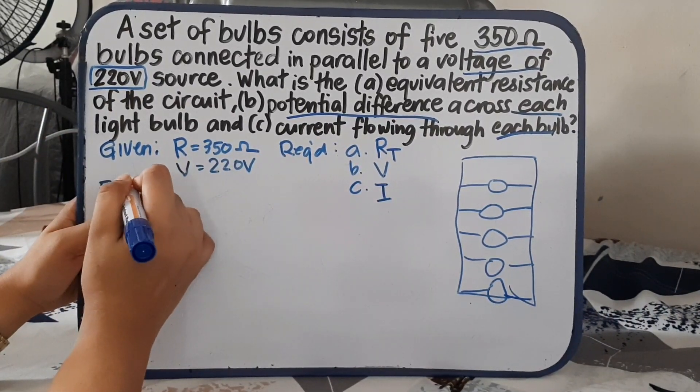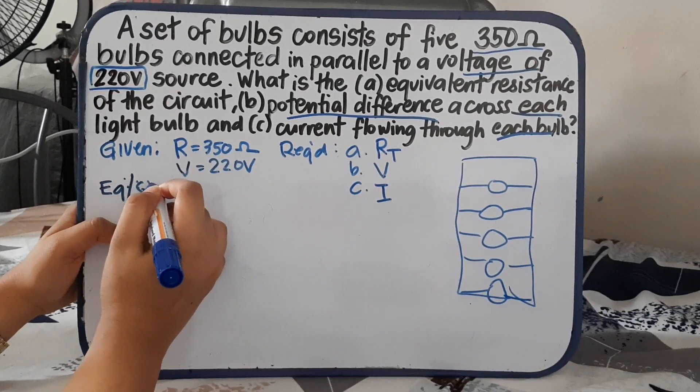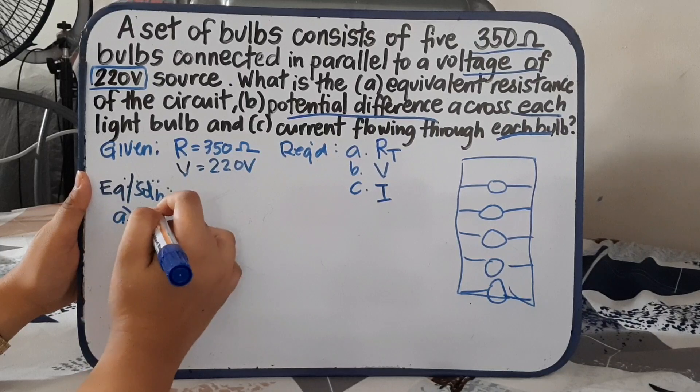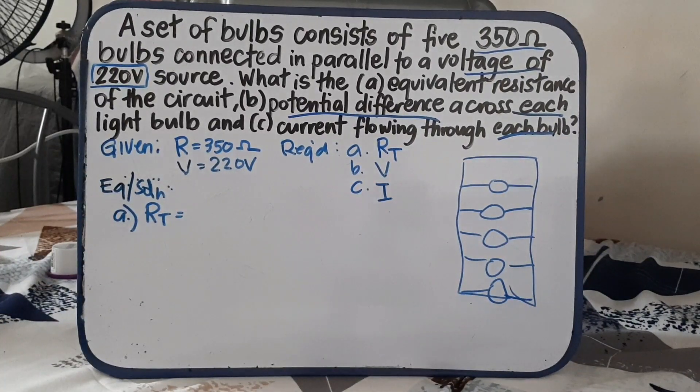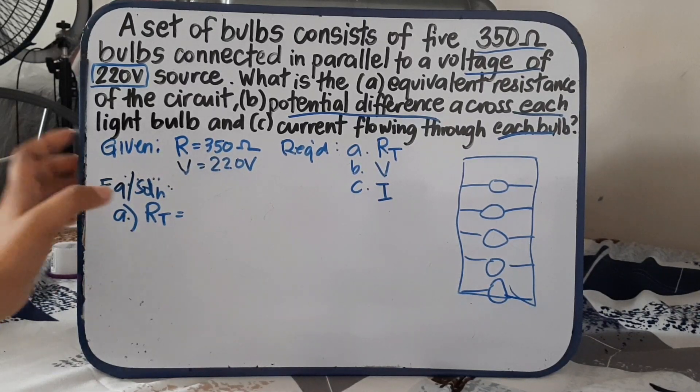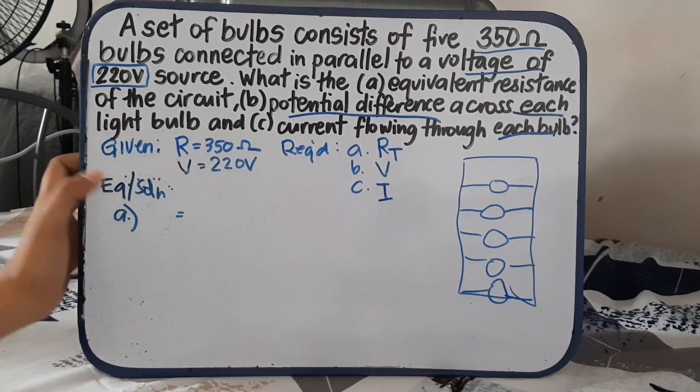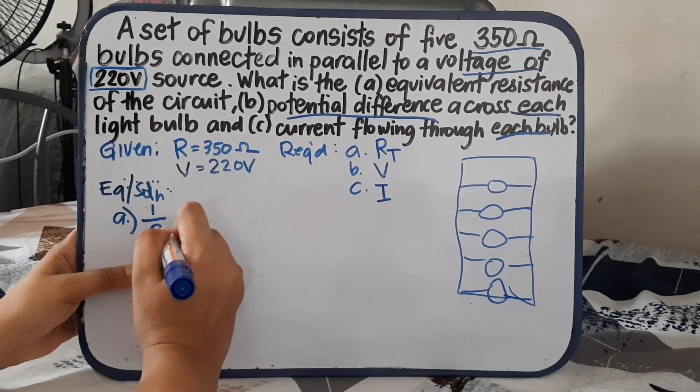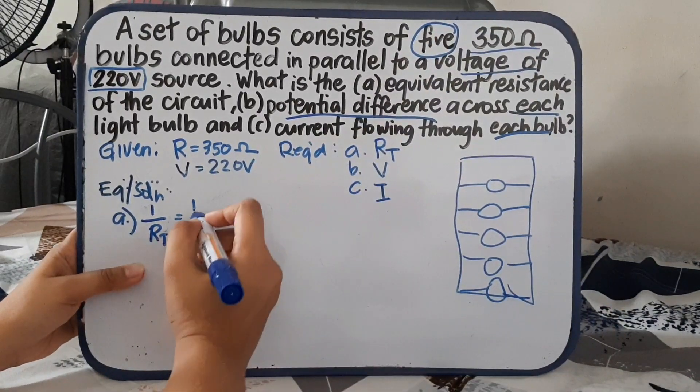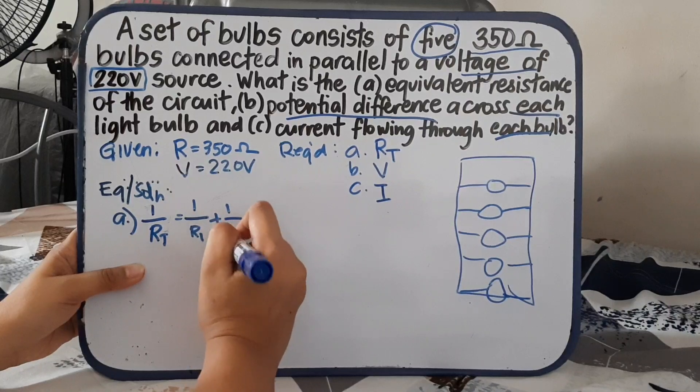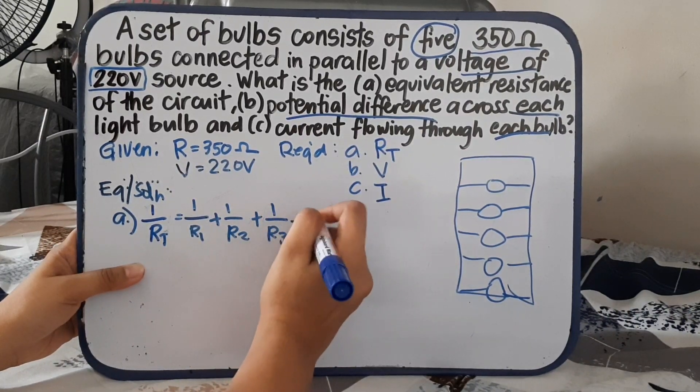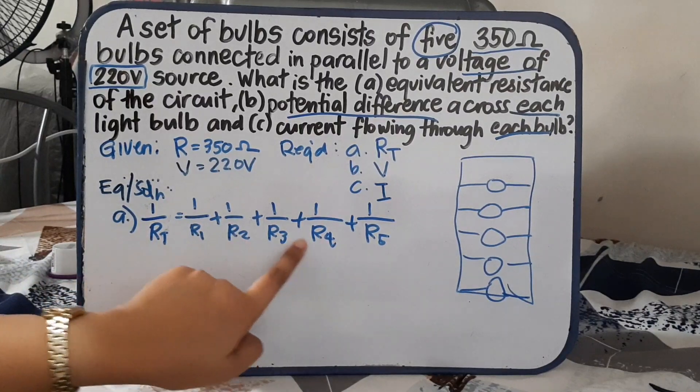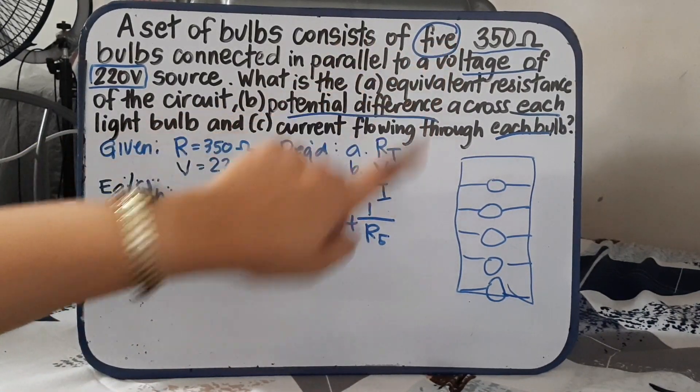Now, let us have the equation. For A, we are looking for the total resistance. How do we solve total resistance in parallel circuit? For total resistance, that's the reciprocal. When we say reciprocals, it's the inverse. So our equation for total resistance is 1 over total resistance equals. How many bulbs do we have? 5. So it means we have 1 over R1 plus 1 over R2 plus 1 over R3 plus 1 over R4 plus 1 over R5, because we have 5 bulbs.